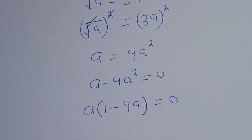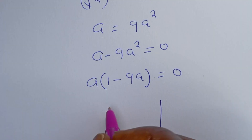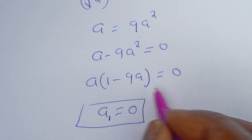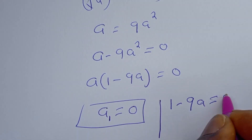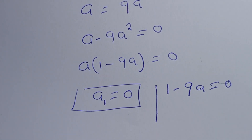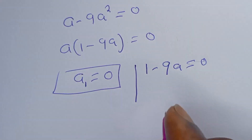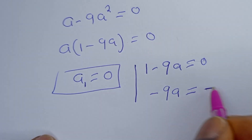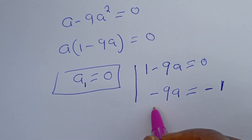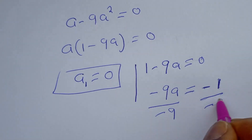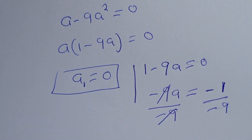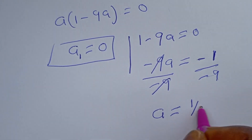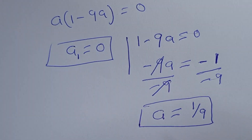Factor out a: a times (1 minus 9a) is equal to zero. There are two cases. First case: a is equal to zero — call this a₁. Second case: 1 minus 9a is equal to zero, so minus 9a equals minus 1, divide both sides by minus 9, giving a is equal to 1 over 9. This is the final answer.